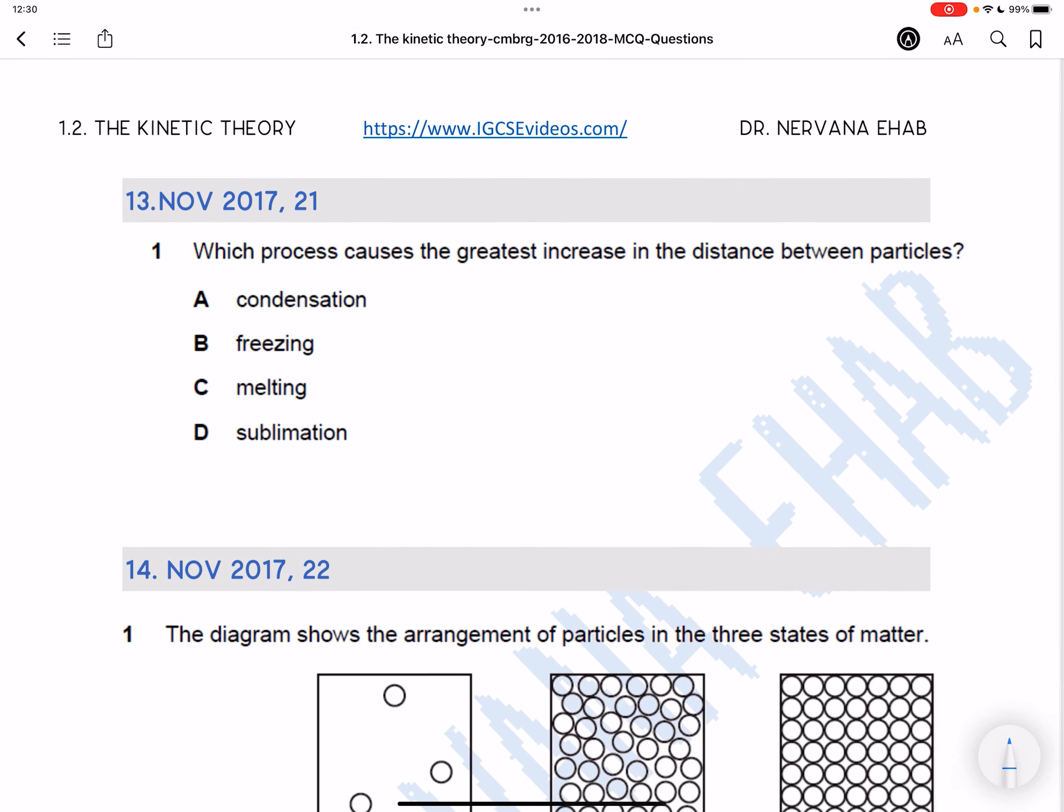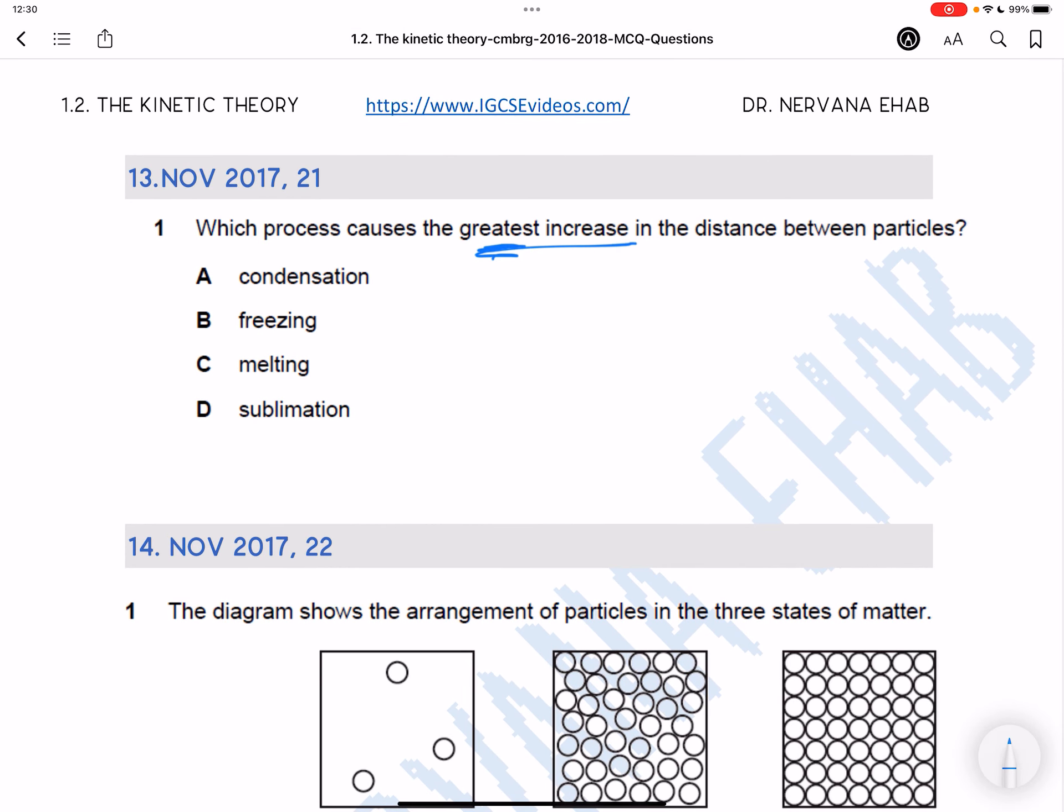Which process causes the greatest increase in the distance between particles? In solid, the particles are tightly packed. And in liquid, the particles are a little bit further apart. And in gas, they are totally far apart.